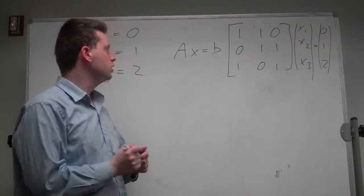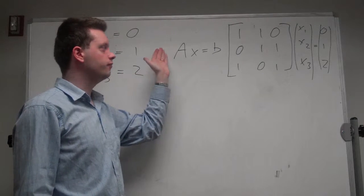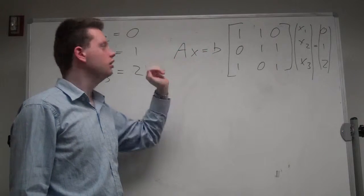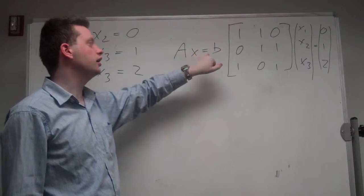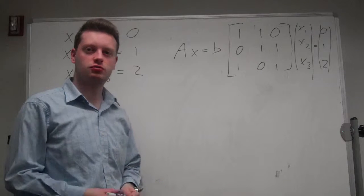Then what you can do is, you can multiply from the left the inverse of matrix A on both sides, and you will get x on the left-hand side and A inverse times b on the right-hand side, and you solve the system of equations.